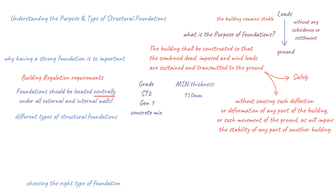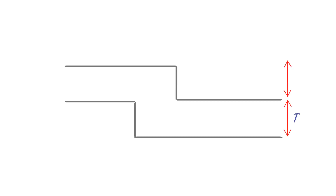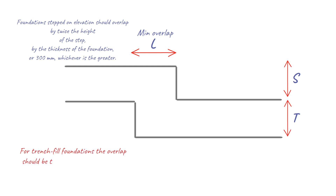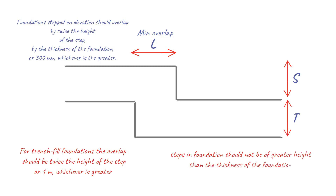When strip or trench-filled foundations have to be stepped, there are strict criteria under the building regulations that need to be complied with to prevent shear failure in the concrete. Foundations stepped on elevation should overlap by twice the height of the step, by the thickness of the foundation or 300 mm, whichever is the greater. For trench-filled foundations, the overlap should be twice the height of the step or 1 m, whichever is greater. Steps in a foundation should not be of greater height than the thickness of the foundation.